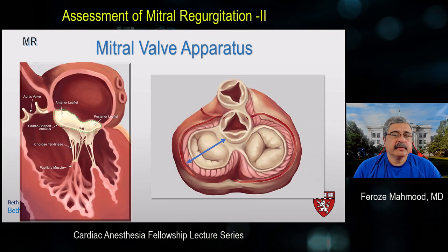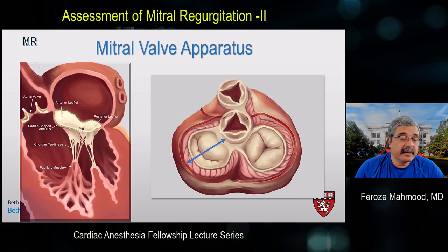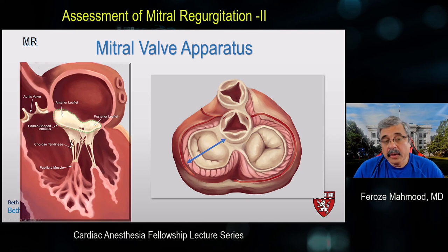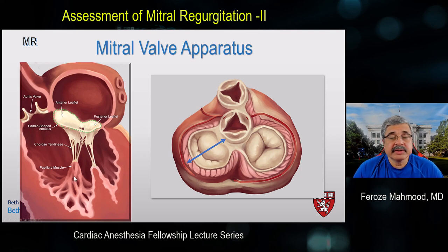The first and foremost assessment of mitral regurgitation starts with recognizing that the mitral valve does not consist of just two leaflets. It is part of a very complicated mitral valve apparatus, which consists of the anterior leaflet, posterior leaflet, left atrium, mitral annulus, chordae tendineae, underlying papillary muscles, and the myocardium. There is also a physiological component — the milieu of preload, afterload, rate, rhythm, and contractility — in which these leaflets interact to keep the mitral valve competent during systole and non-restrictive during diastole.